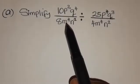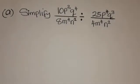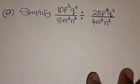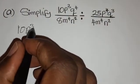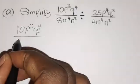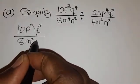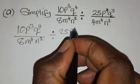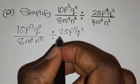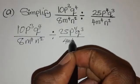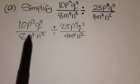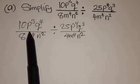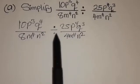To simplify means something is looking big and they want you to reduce it. Let's rewrite this expression: 10p cubed q to the power 4 over 8m to the power 4 n squared, divided by 25p to the power 4 q to the power 3 over 4m to the power 4 n squared. You can see that this expression is made of two fractions with a division symbol.